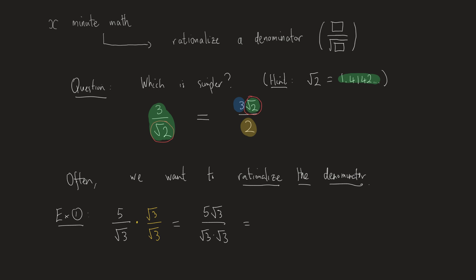If I simplify this, I'll get 5 root 3 all over 3, right? Because root 3 times itself, by definition, gives me 3. So there you have it. I've managed to move my root 3 from my denominator upstairs to my numerator.